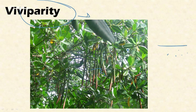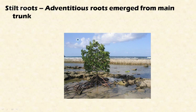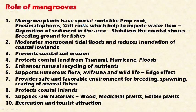Mangroves have stilt roots that act as adventitious roots emerging from the main trunk for support, since these plants inhabit muddy coastal areas and need support. Now, regarding the very important roles of mangroves: the mangrove plants have special roots like prop roots, pneumatophores, and stilt roots that help to impede water flow. This restricts water flow and causes deposition of sediment in the area, thereby stabilizing the coastal shore. It also acts as a breeding ground for fishes and other aquatic animals like turtles.